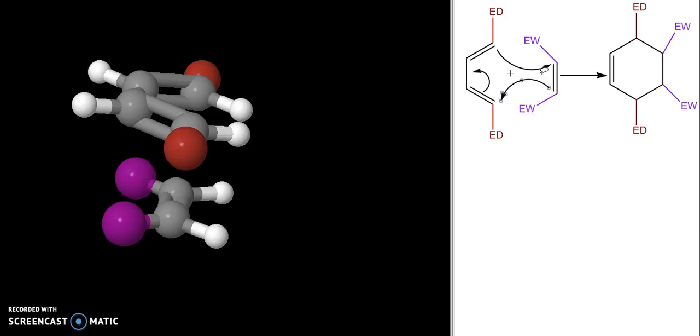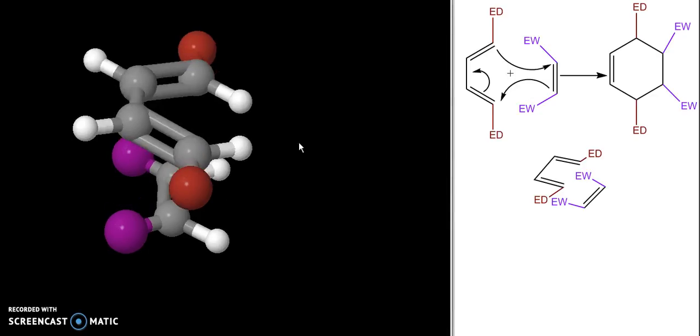This is a really tricky thing to draw in a two-dimensional model. I've tried to draw it here but it's really hard to visualize. It's much easier to see in this three-dimensional model that I can rotate. You can see this is my diene with two double bonds. These brown spheres represent my electron donating groups.